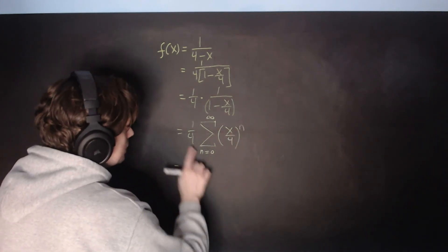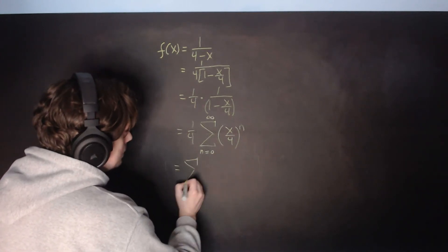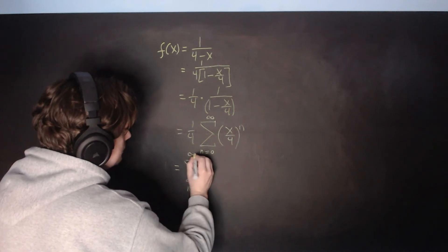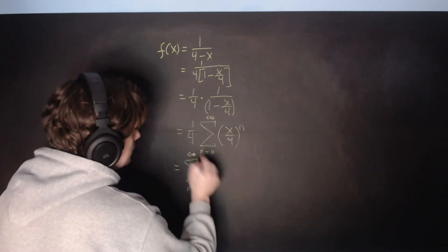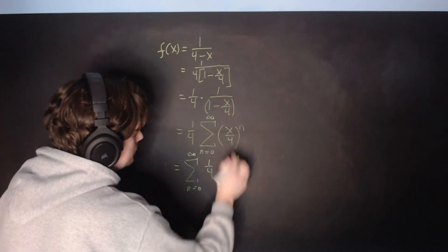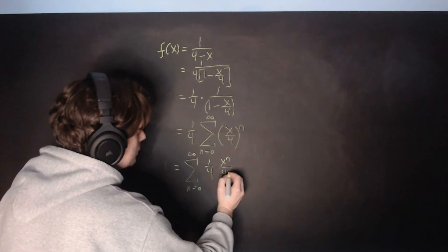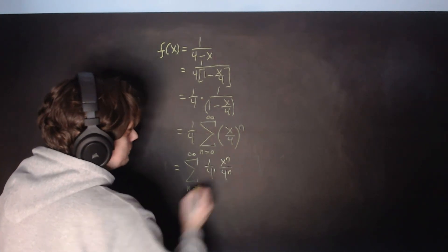From here, you can distribute the 1 fourth inside, so it's going to be the summation as n goes from 0 to positive infinity of the following: 1 fourth, distribute the n to the x and the 4, so it's x to the n over 4 to the n, and this is like 4 to the 1st, remember.